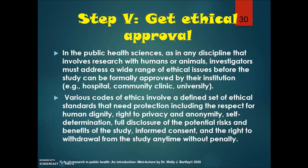Step five involves getting ethical approval for your study. In the public health sciences, like all disciplines involving research with humans or animals, investigators must address a range of ethical issues before the study can be formally approved by their institution. Codes of ethics involve standards including respect for human dignity, the right to privacy, confidentiality of data, self-determination, full disclosure of potential benefits and risks, informed consent, and the right to withdraw from the study at any time without penalties.